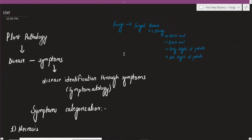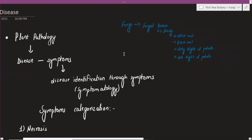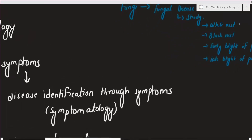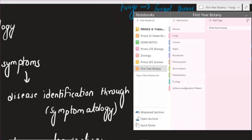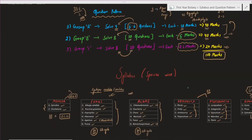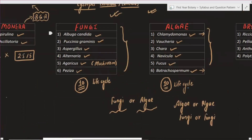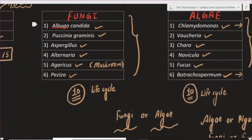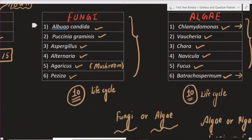We need to know the pathogen. The causative organism is Albugo candida — write it down. So you can copy it: Albugo candida. Underline it, because in handwriting it should be underlined since scientific names are written in italics.